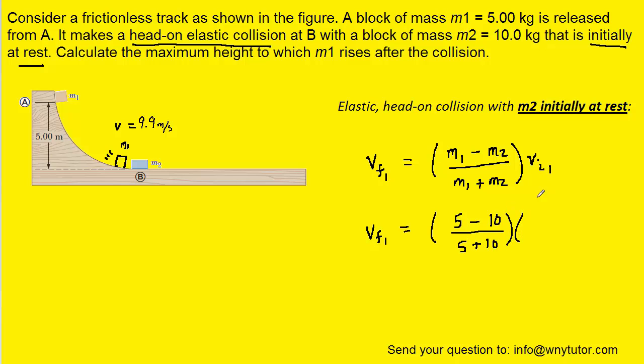And then we just determined the initial velocity of object 1. We're calling it the initial velocity now because this is right before it collides with object 2. So we can plug in that value of 9.9 meters per second that we had found earlier. And then we'll pick up our calculators and determine the final velocity of object 1. And when we do that, we obtain negative 3.3 meters per second, roughly.